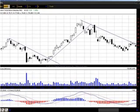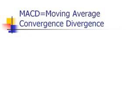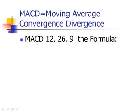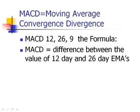Let's begin by understanding what MACD is made up of. MACD is short for Moving Average Convergence Divergence. The most common formula, used by default on almost all charting packages, is the 12-26-9 formula. The MACD line is made up of the difference between the value of the 12-day and the 26-day exponential moving averages.